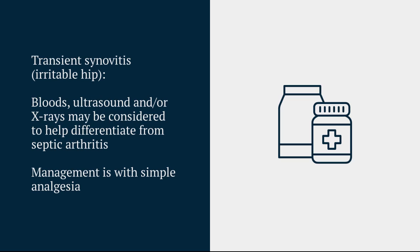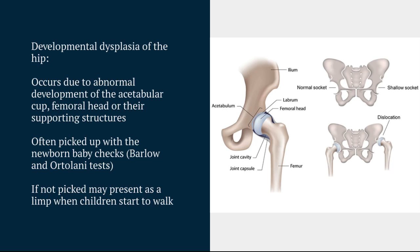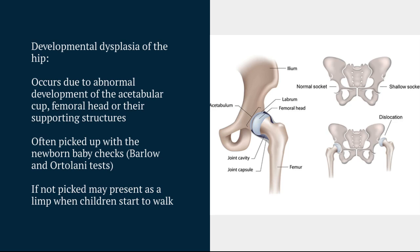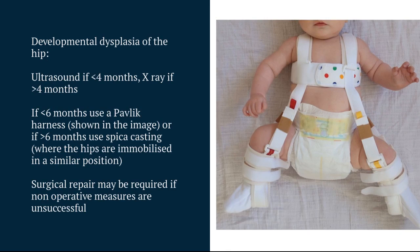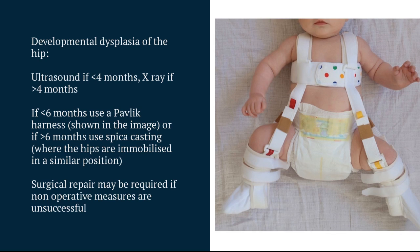Next, we're going to talk about developmental dysplasia of the hip, which occurs when you have abnormal development of either the acetabulum or the head of the femur. When you're doing a newborn baby check, we assess for any early evidence of this with the Barlow and Ortolani tests. But if it's not picked up at that age, once children start to learn to walk, they might develop a bit of a limp or look a little bit lopsided when they're walking. If the child is under four months, we're going to do an ultrasound; if they're over four months, we're going to do an x-ray. Management is essentially with immobilisation, either using a harness or plaster of Paris. If these non-operative interventions are unsuccessful, then we may need to progress to surgical repair.